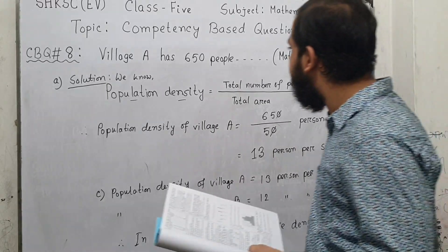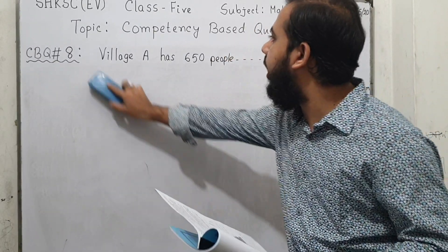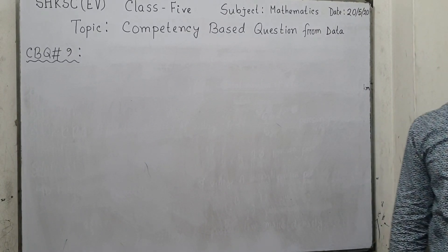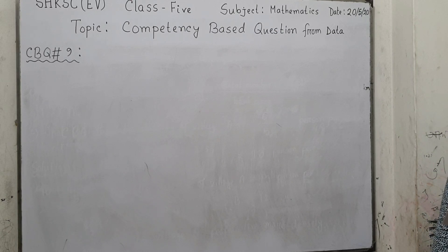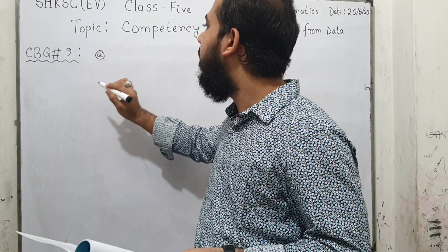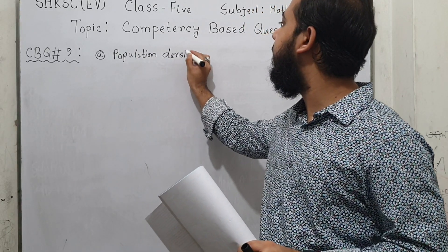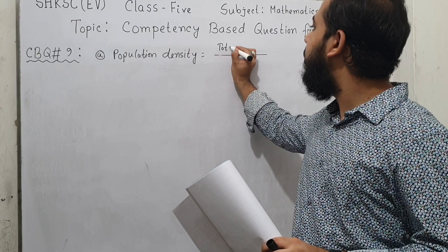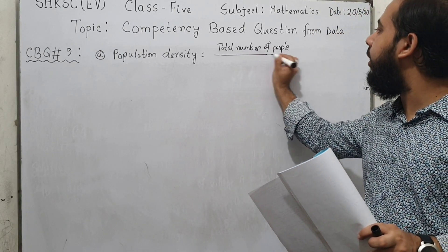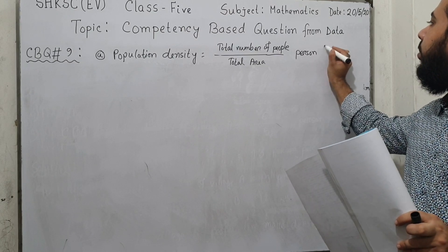Now moving to Question number 9. In Barakola village there are 18,000 people and the area is 15 square kilometers. Question 9A asks: write the formula of population density. The formula is: population density equals total number of people divided by total area, with the unit being persons per square kilometer.